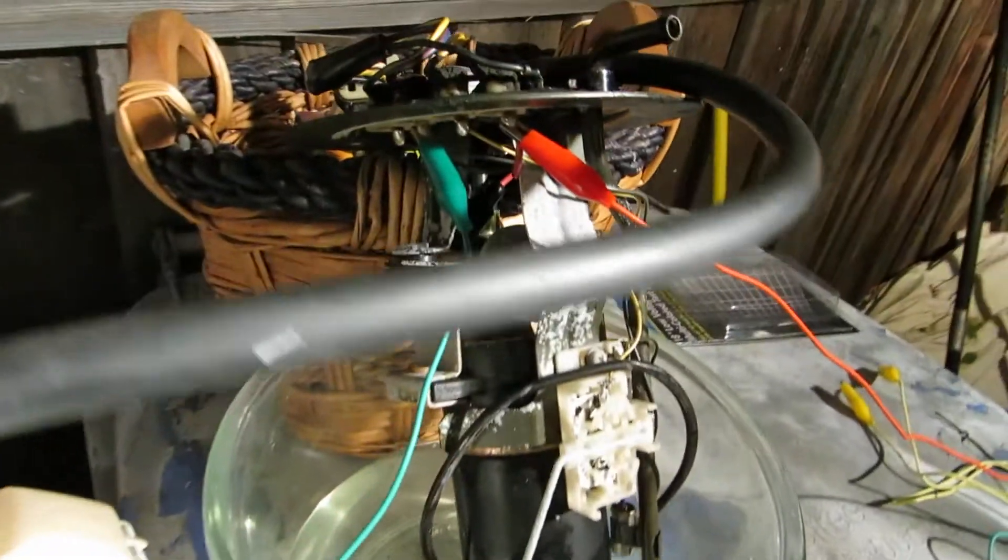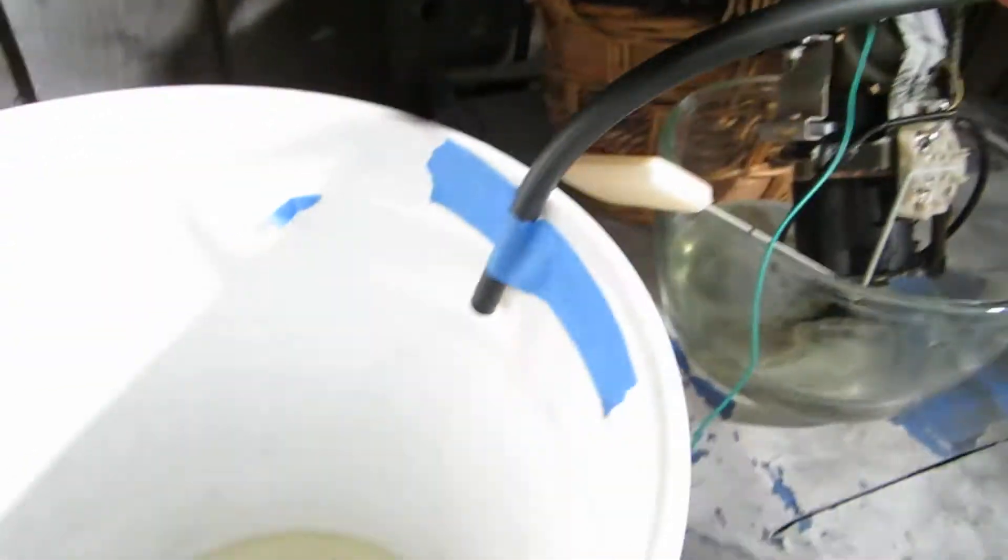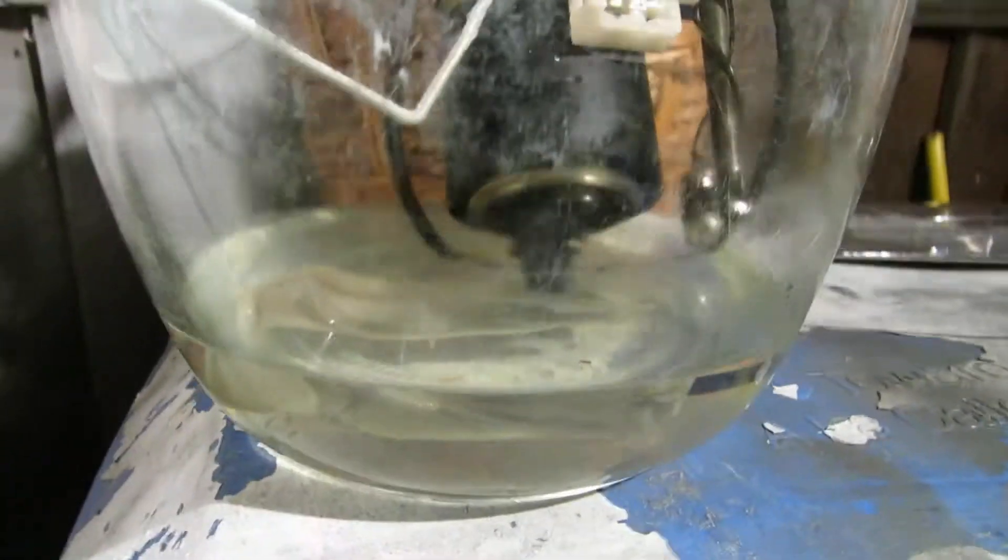So we have the fuel pump out. We have the pressure side. It's a 6mm line going to a bucket with fuel in it. We have the fuel pump submerged partially in fuel. Really, you just need the sock submerged there.